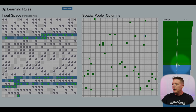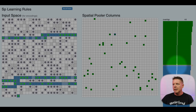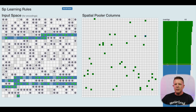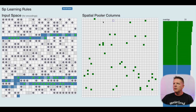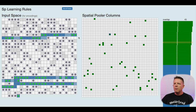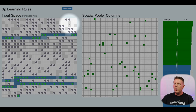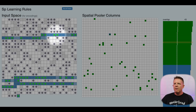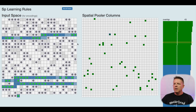We draw that line here and say any columns below that line are not winning in this compute cycle. There is some tiebreaker logic that randomly selects columns if there are several with the same overlap score — that's just an implementation detail. Also note the dim squares here and in the input space: those cells will never get connections to this particular column because they are not part of its potential pool. Connections will never grow to those spaces because there's no dendritic segment going to that input space.